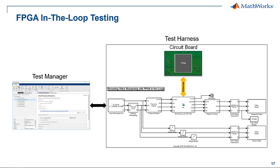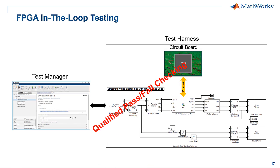The final target hardware must be tested. One method to do this is to connect the hardware to Simulink via HDL Verifier and test using FPGA-in-the-loop capability. This also includes the use of Simulink Test with qualified pass-fail checking.